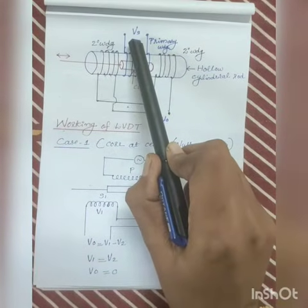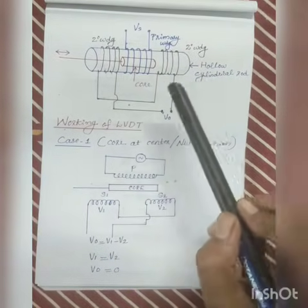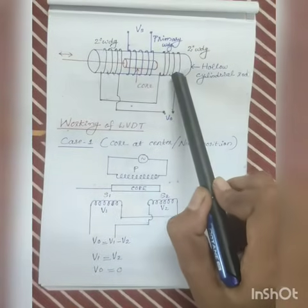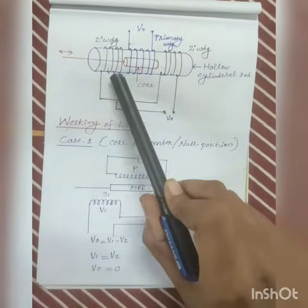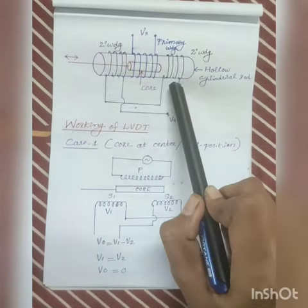When an AC supply is given to the primary winding, a variable magnetic field is produced. This interacts with the secondary coil and EMF is induced in two secondary coils V1 and V2.